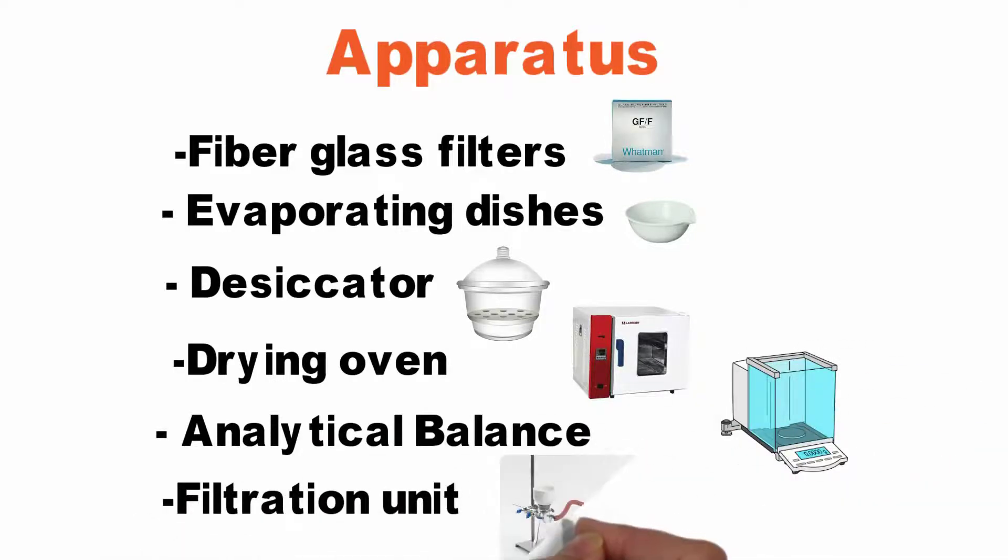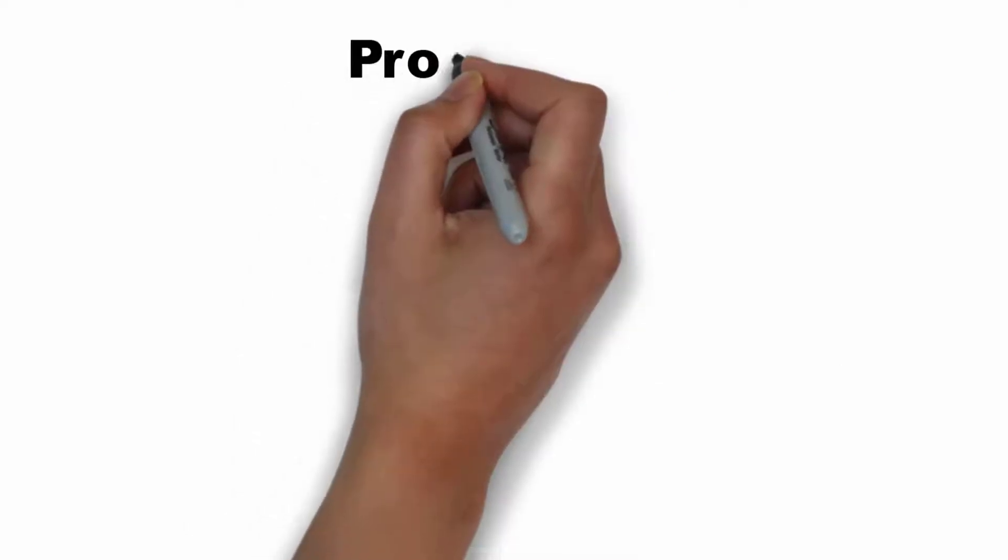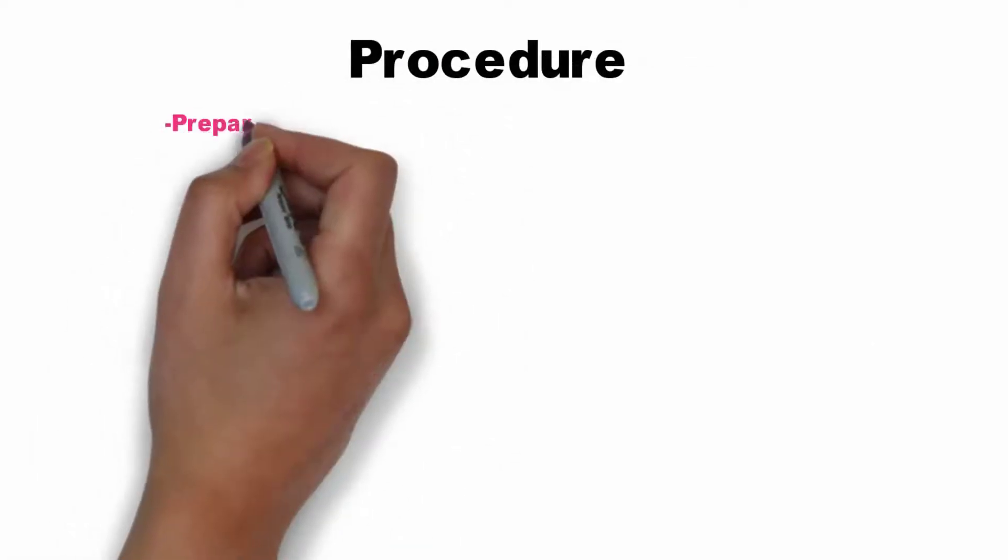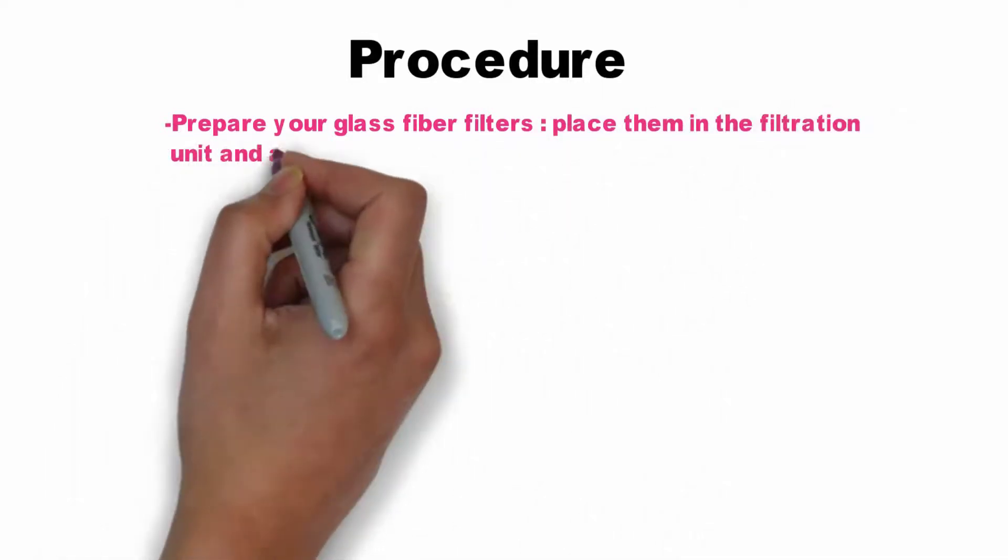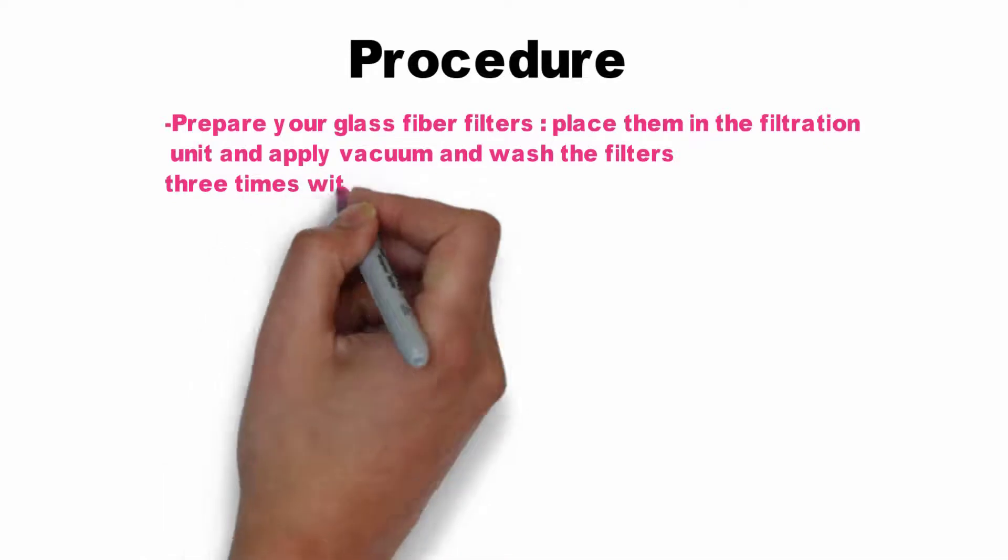Finally, a filtration unit. Now to the procedure: prepare your glass fiber filters, place them in the filtration unit, apply vacuum, and wash the filters three times with 20 ml reagent grade water.